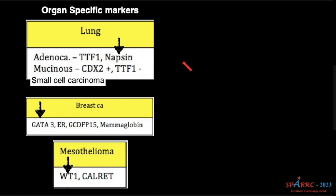For lung, you all know adenocarcinoma: TTF-1 and Napsin — that's another important marker to remember. For mucinous carcinoma, it is CDX-2 and it will be negative for TTF-1. Remember CDX-2 will be positive in all mucinous tumors. If there is a mucinous carcinoma from the ovary metastasizing to the lung, it will be positive for CDX-2. So clinical history is very, very important.